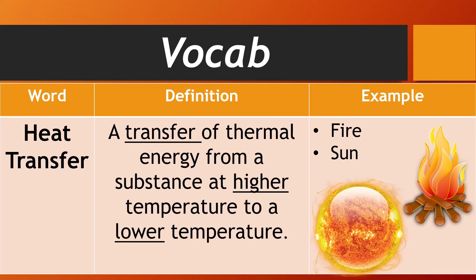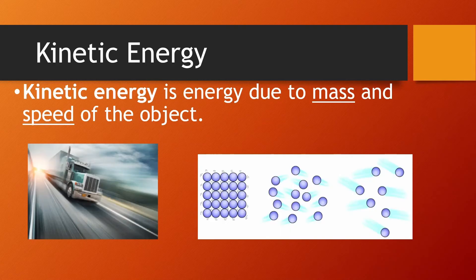Next we have kinetic energy. Kinetic energy is the energy due to the mass — how many particles something has — and the speed of the object. Kinetic energy is the energy of motion due to the mass and speed of the object.